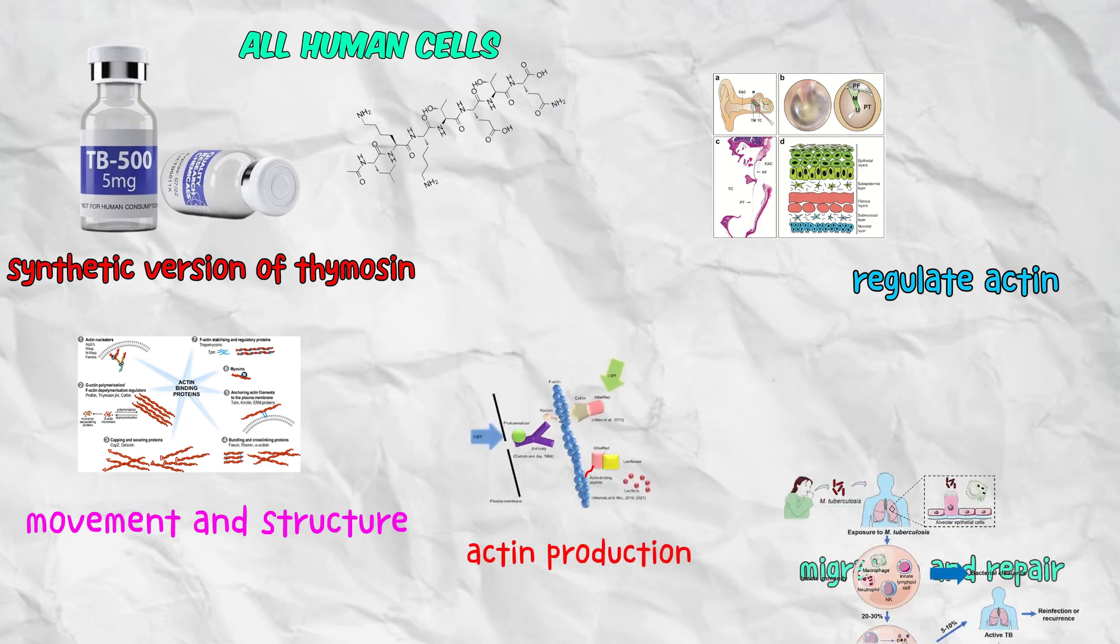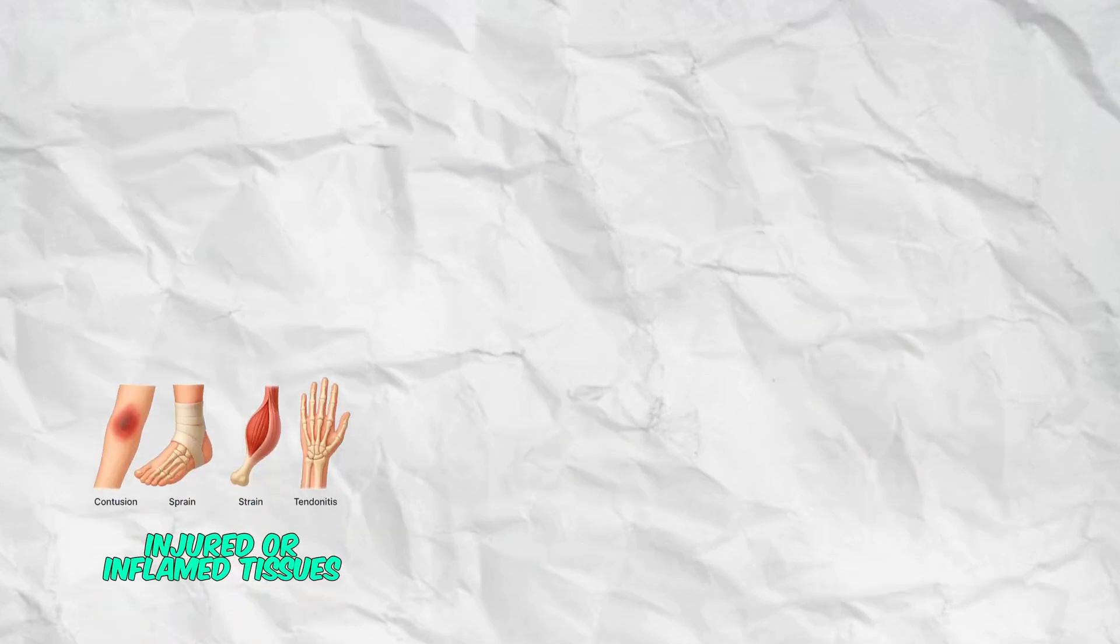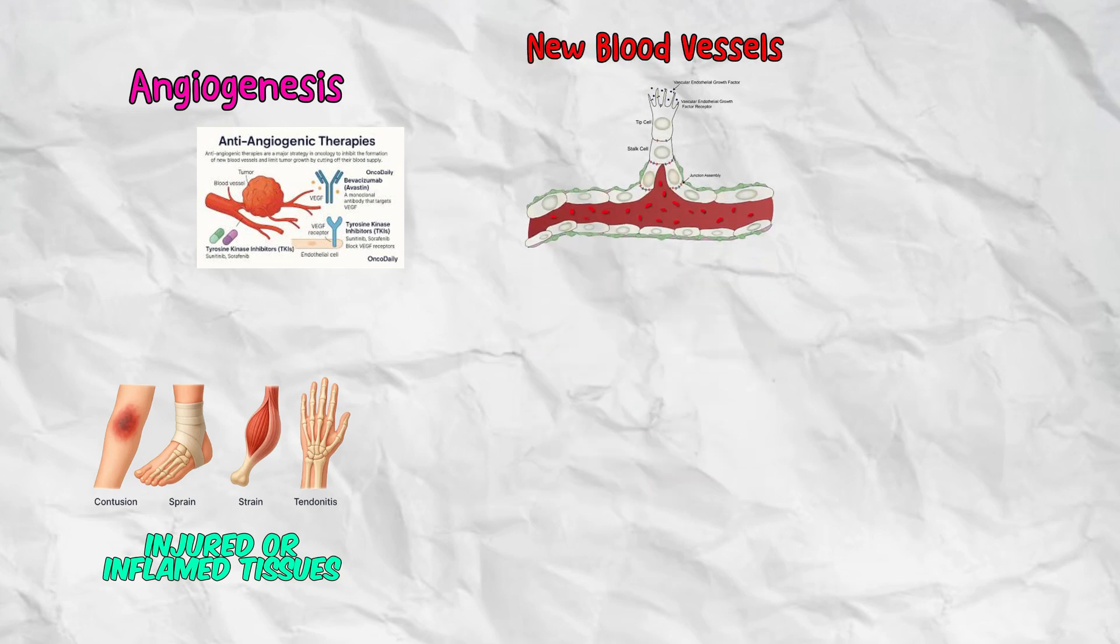By enhancing actin production, TB-500 promotes cell migration and repair, especially in injured or inflamed tissues. It also encourages angiogenesis, the formation of new blood vessels, which improves oxygen delivery and speeds up healing.